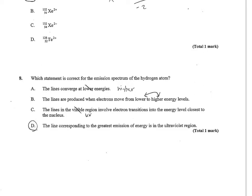Number 8, which statement is correct for the emission spectrum of hydrogen atoms? The lines converge at lower energies. No, the lines always converge at the higher energies. The greatest step is from the nucleus to one, and then one to two, two to three. The steps are getting closer and closer. The lines are produced when electrons move from lower to higher energy levels. No, that's when energy is put in. The energy is released when the excited electrons move back toward ground state. The lines of the visible region involve electron transitions into the energy level closest to the nucleus. No, the UV would have the highest energy. And D, the line corresponding to the greatest emission of energy is in the ultraviolet region. That is the true statement.